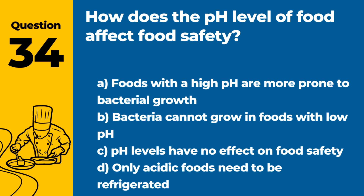Question 34. How does the pH level of food affect food safety? Answer: A. Foods with a high pH are more prone to bacterial growth. Low pH (acidic) environments can inhibit the growth of many pathogens.